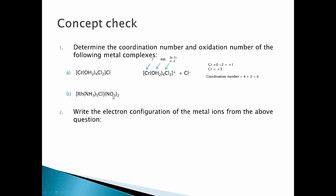For the second example with NO3− as counter ion: NO3− is −1, so the complex must be +2 overall. With 1 chlorine (−1) and 5 ammonia (neutral), the metal must be +3. The coordination number is 5 plus 1 = 6.